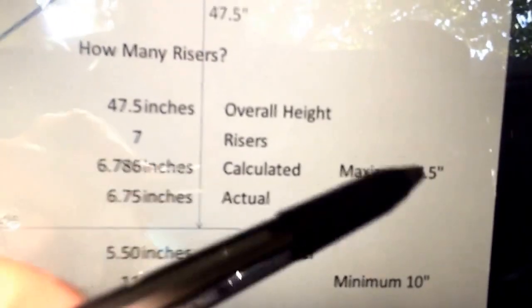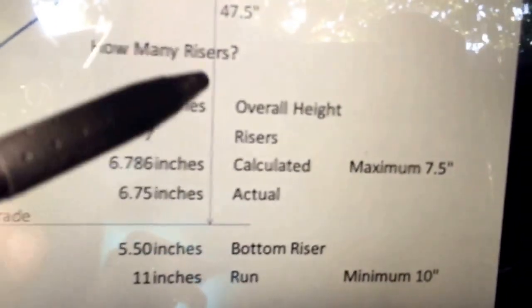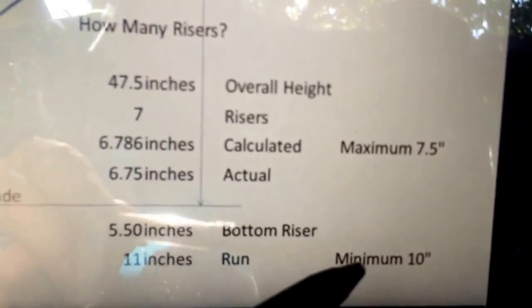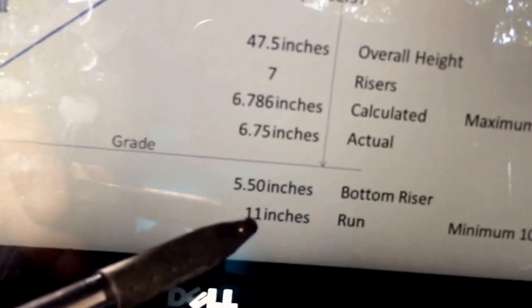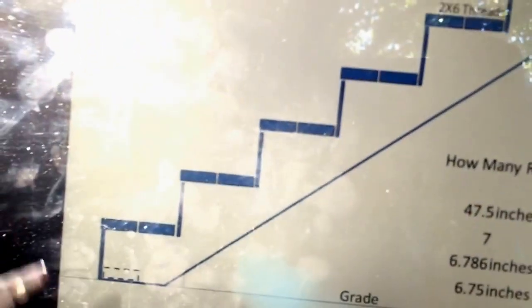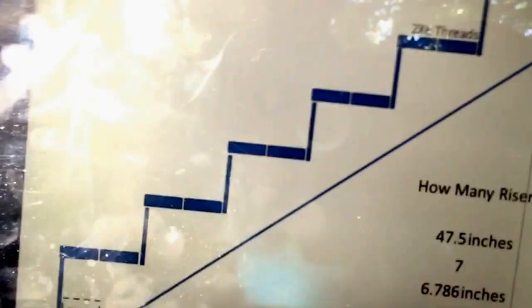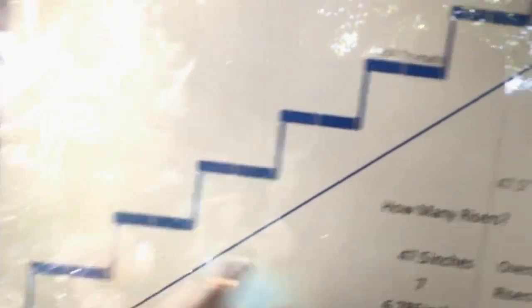Your maximum rise seven and a half. We're at six and three quarters. We're good. Your minimum run is 10 inches. Run is the distance between here and here. And so we're taking ours to 11 inches. So we're above the minimum run. This is just to give yourself a natural stepping action. It's not awkward. It's not too steep. It's not too shallow. Your foot has plenty of tread to ride on.